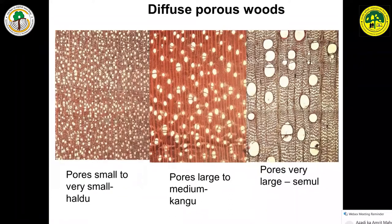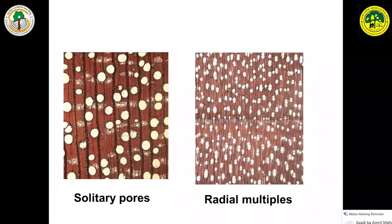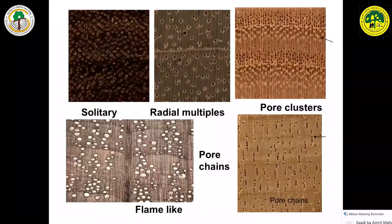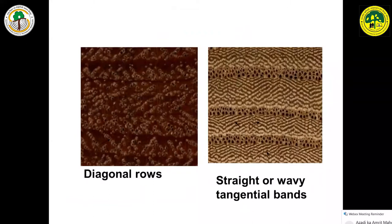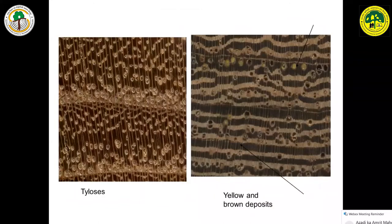When examining vessels, we have to see the size — in some it may be small, some medium, some very big. Some vessels are exclusively solitary, some in radial multiples, some in clusters, some look like flame-like chains. In some cases they are arranged in diagonal rows, in some in straight wavy tangential bands. Some vessels have yellow or brown deposits, and in some, tylosis will be there, which helps in identification.